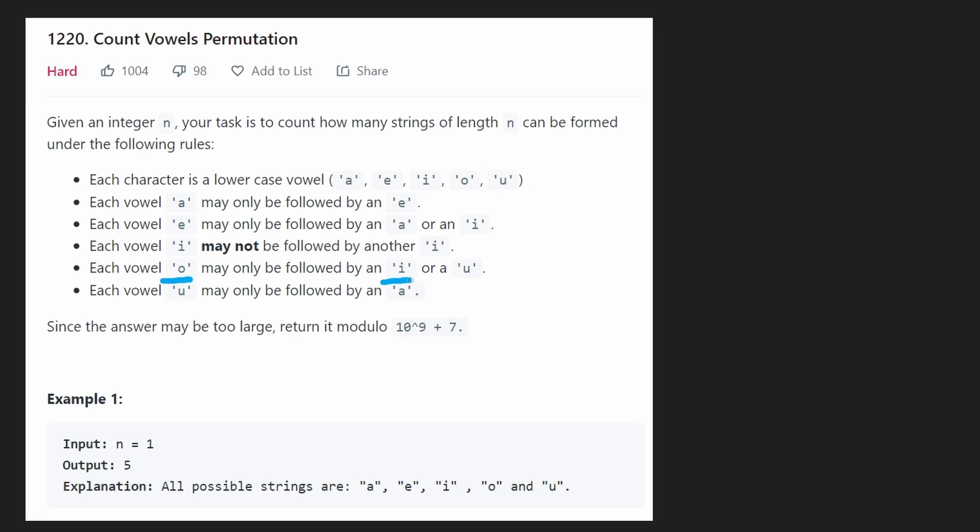O's can only be followed by i's or u's and u's can be only followed by a's. And of course in this example we're given a pretty trivial case where n is one. In that case we can only create strings of one length, so each individual character can satisfy that. Immediately let's start with a brute force case. Let's start for n equals two.